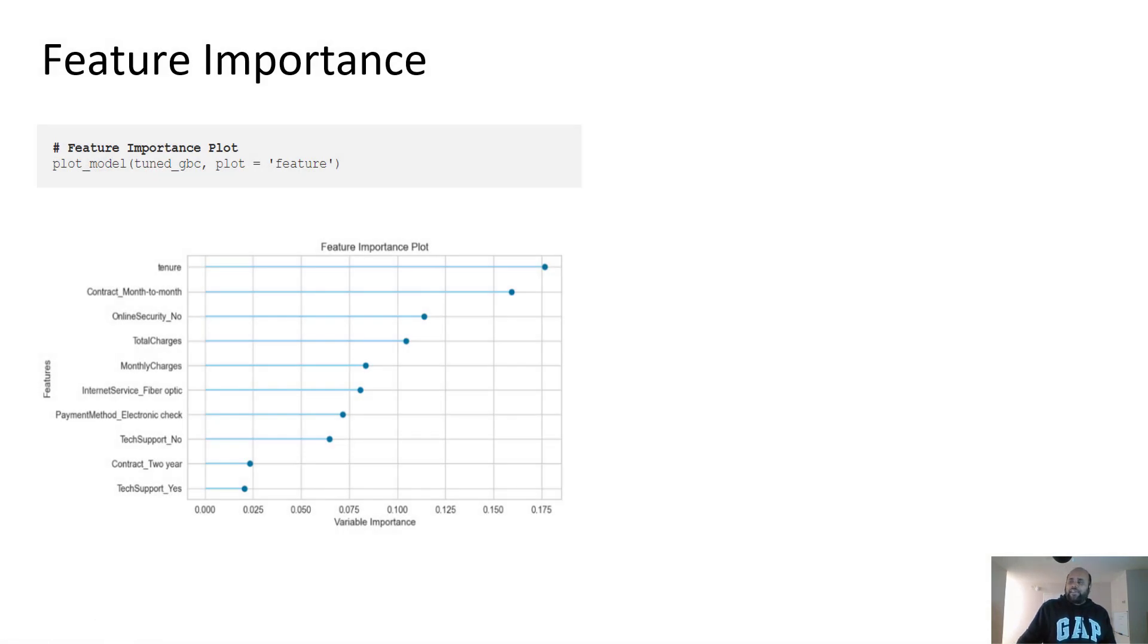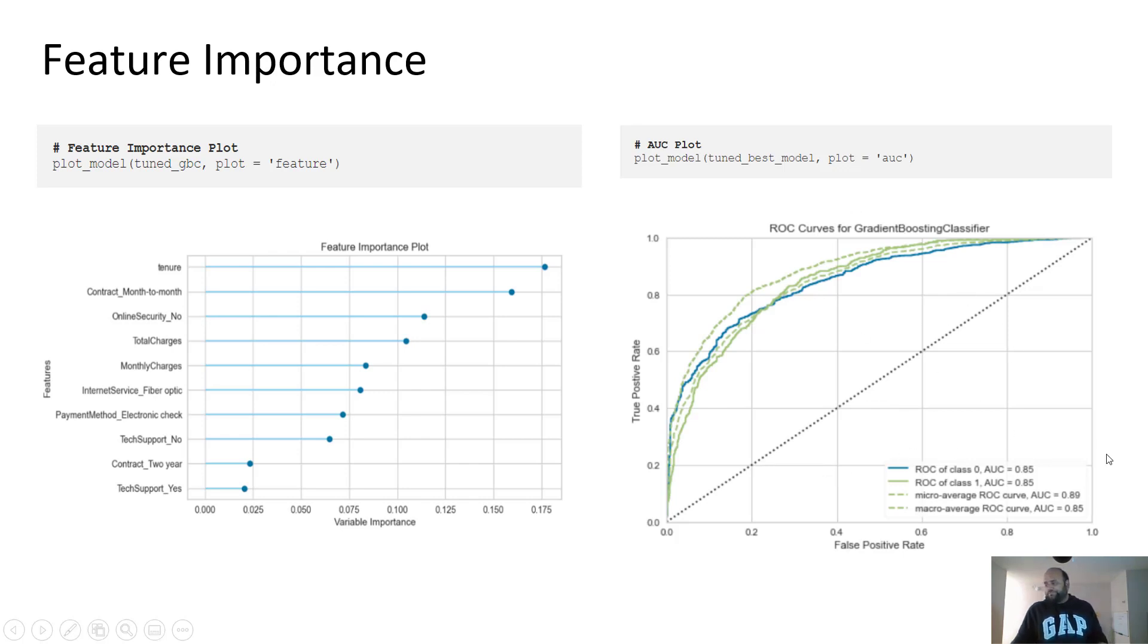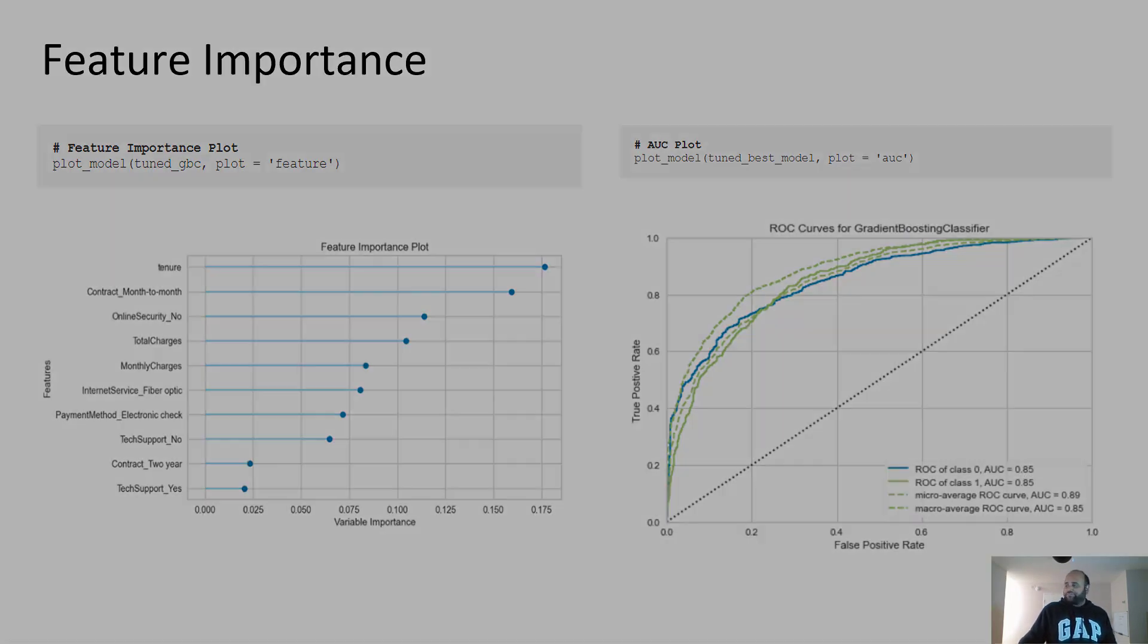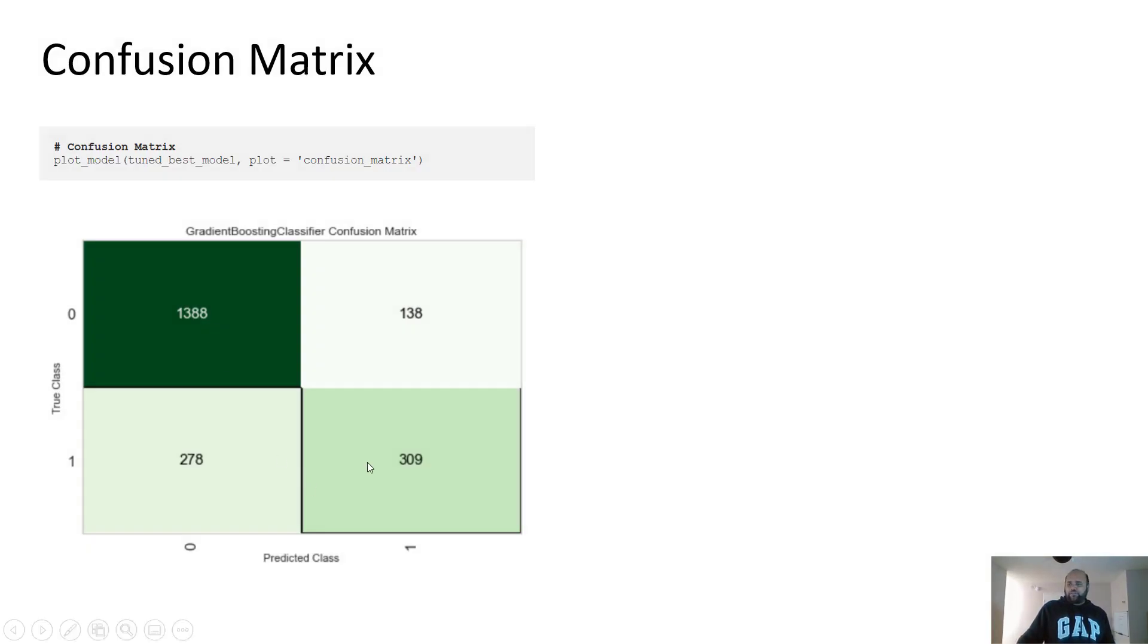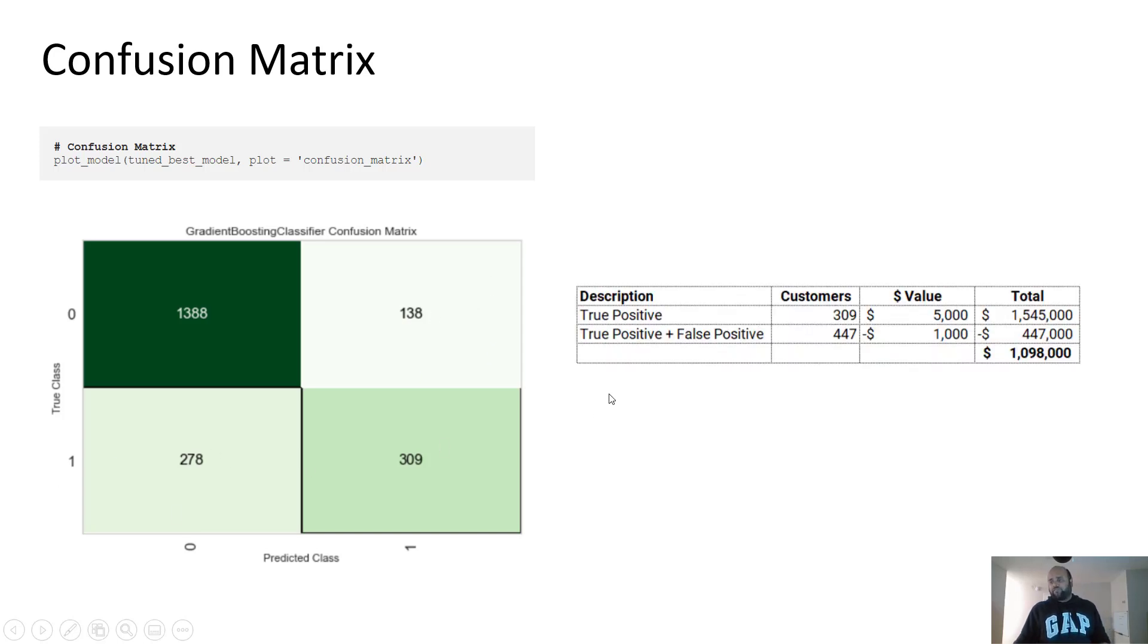If you want, you can analyze the performance of models. So with just one line of code, you can see the feature importance. Tenure, the most important feature for algorithm to predict the churn, contract month to month, online security, no. This is AUC plot. This is the number we were seeing on the other table, 85. Confusion matrix, this shows you that this is basically four quadrants. The one here bottom right is true positive. On the top here is true negative. This 138 is false positive. And this is false negative.